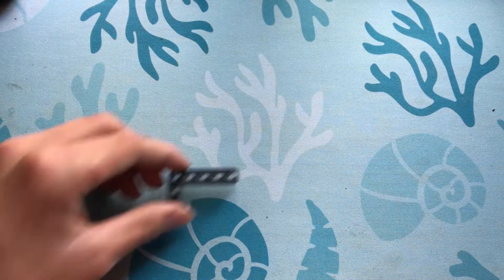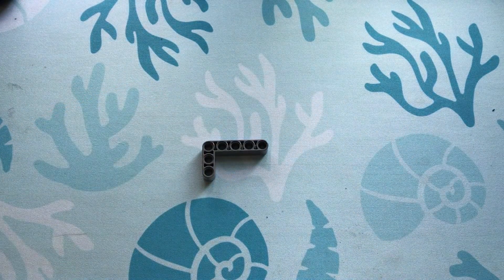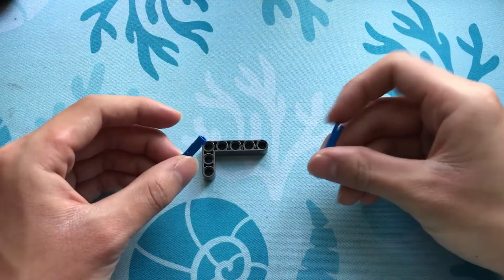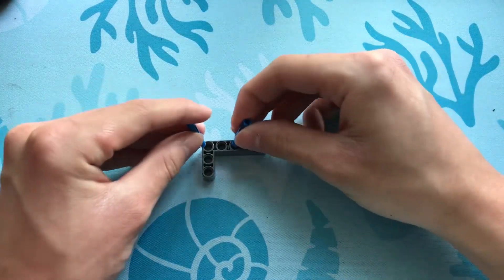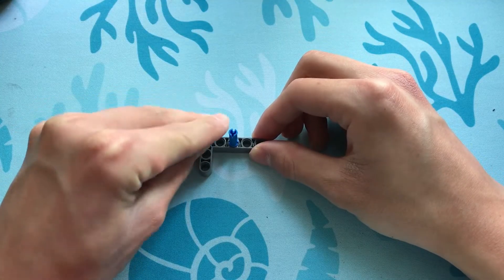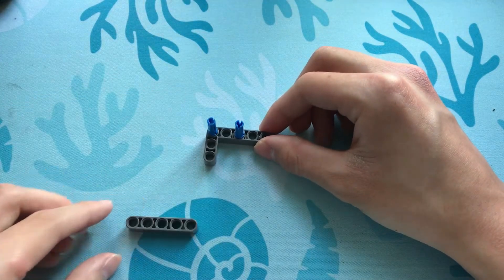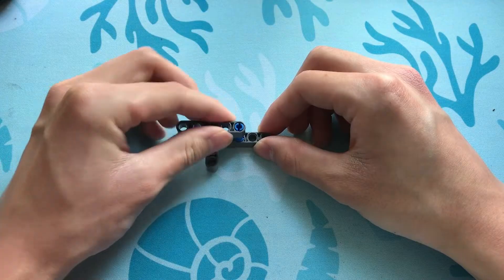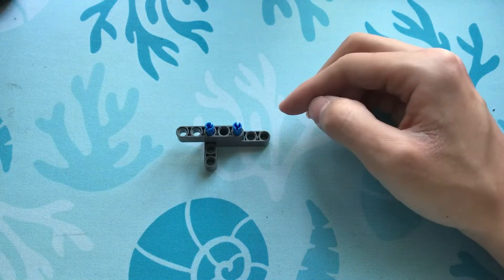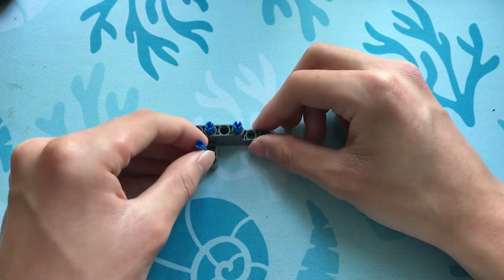Let's start by taking a 3x5 L beam. We'll take two of these long blue pins, and insert them here, and here. Next, we'll connect a 5 beam onto these two blue pins. Let's take another blue pin, and put it here.